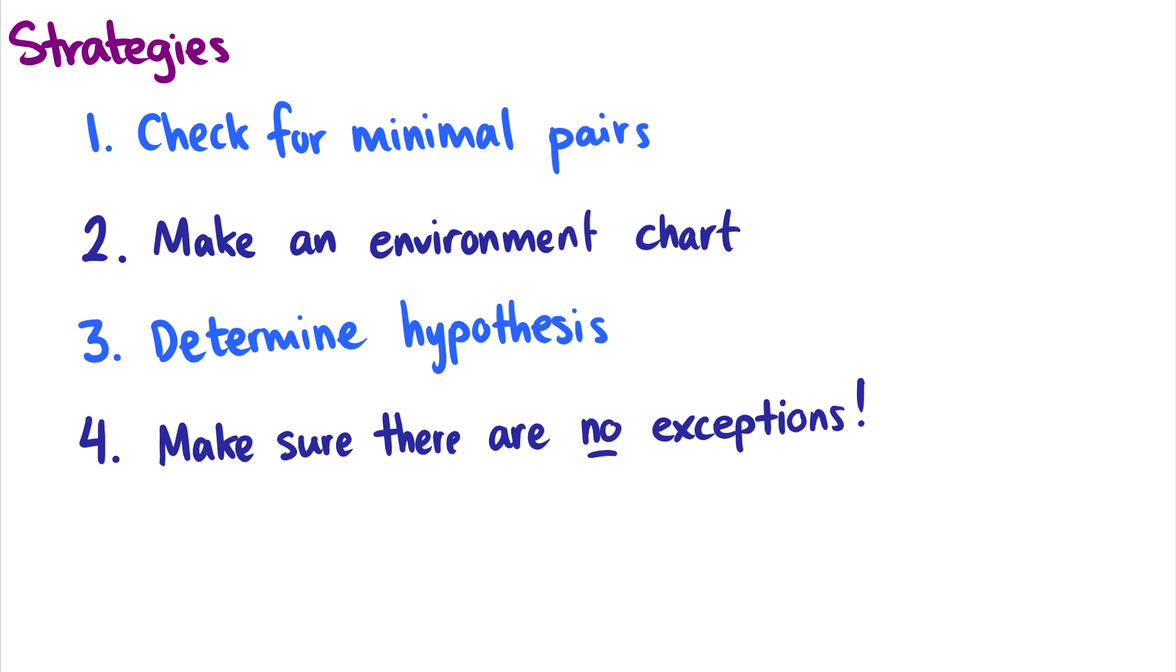So in order to kind of solve these data sets, there's four steps you want to do. You want to check for minimal pairs to see if they're separate phonemes. Then you want to make an environment chart if there are no minimal pairs. You want to make the hypothesis just like we did about voiceless stops. And then you want to take a look at the data set to make sure there's no exceptions to your hypothesis. Again, if you want a more in-depth guide to this, check out my phonology series. It is in way more detail and is fitting of a second level course in phonology compared to this, which would be a first course in phonology. So if you have any questions, leave them in the comments below and I will do my best to answer them.